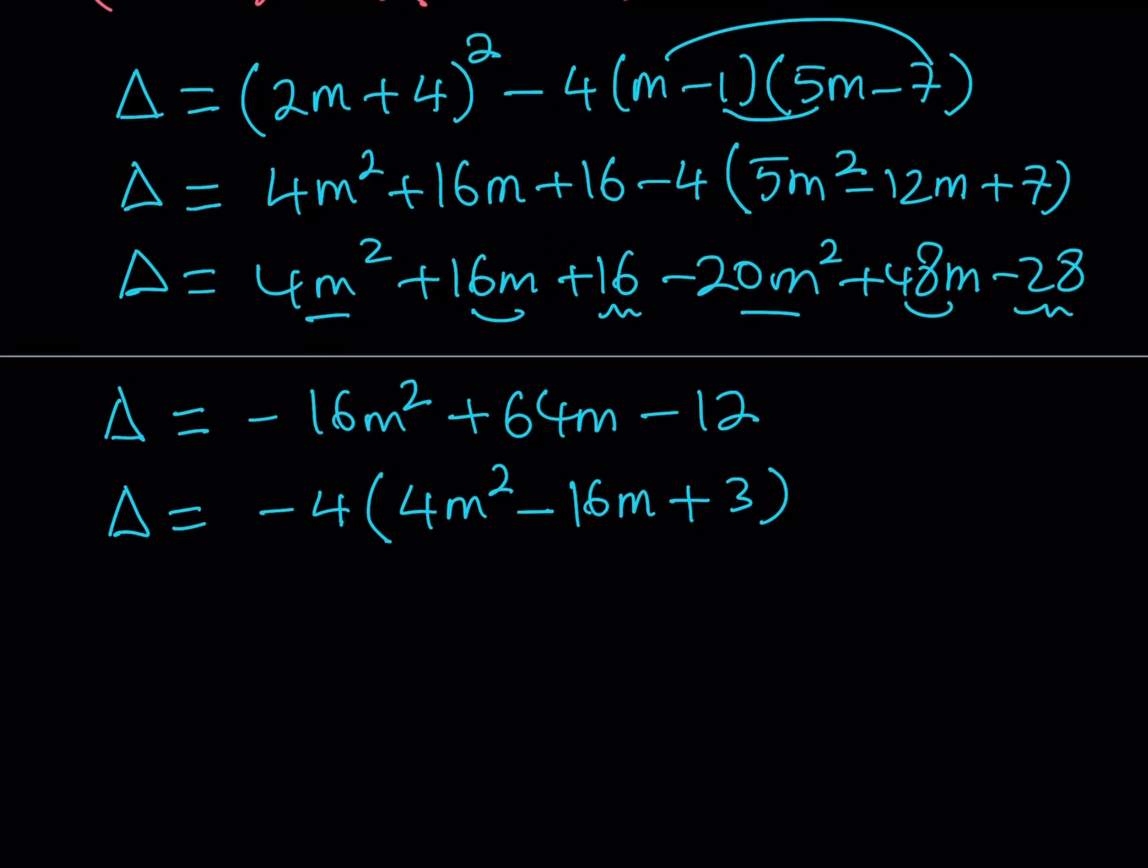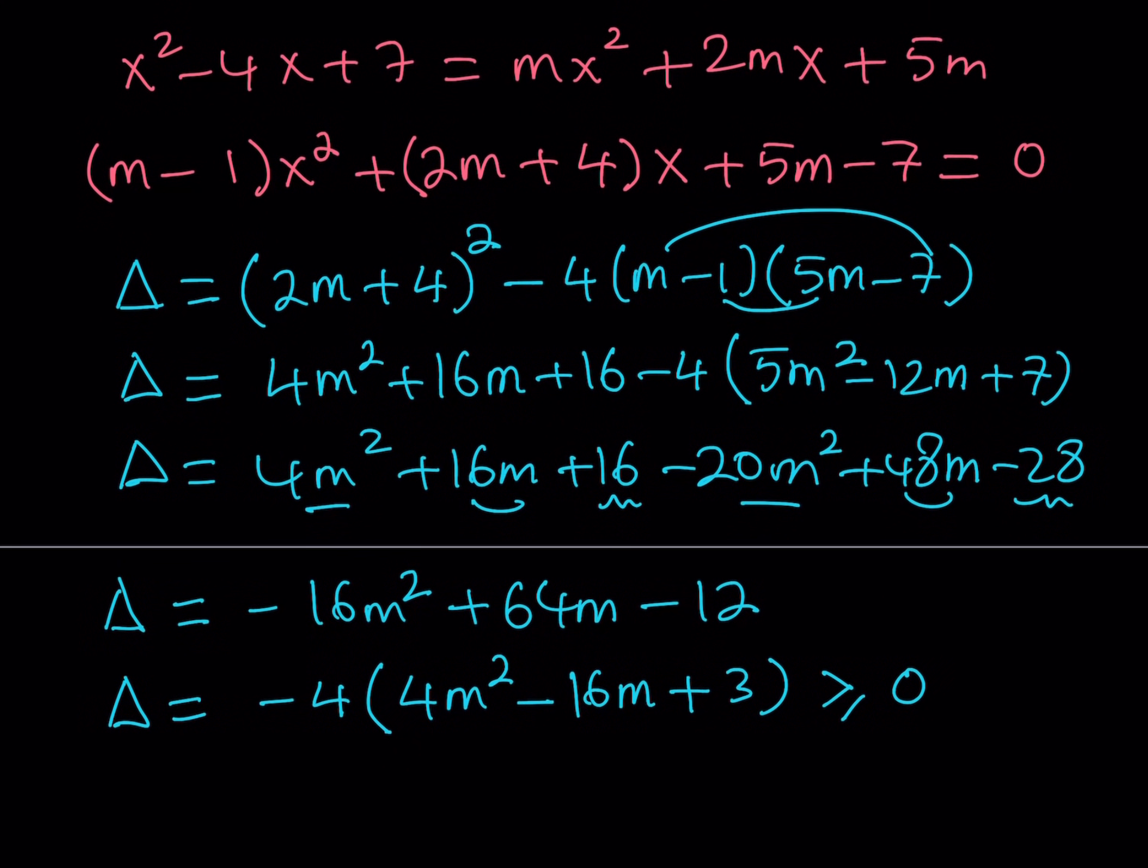So what am I looking for? I want the real x values for this function. And this is the discriminant, right? And I want the discriminant to be non-negative. So in other words, my discriminant needs to be greater or equal to zero, so that my quadratic equation is going to have real solutions.